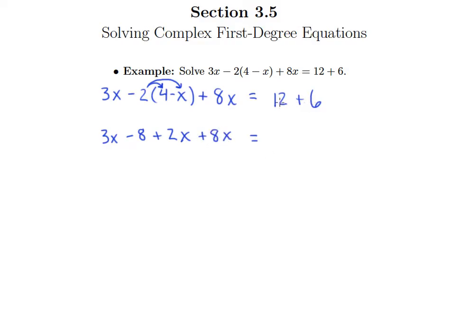Then over on the right I can add those two, 12 plus 6 is 18. Alright so I'll go to my next step. I still have some simplifying to do on the left side here. So I've got three different like terms so I'll add those up: 3 plus 2 is 5 plus 8 is 13. So what I'll have is 13x minus 8. And of course I rewrite the 18 that's on the right side.